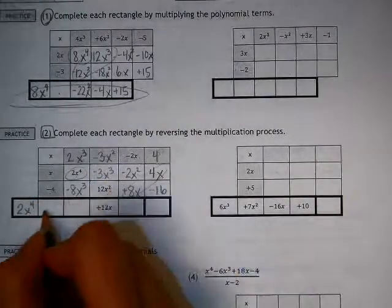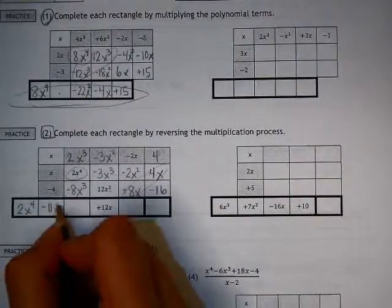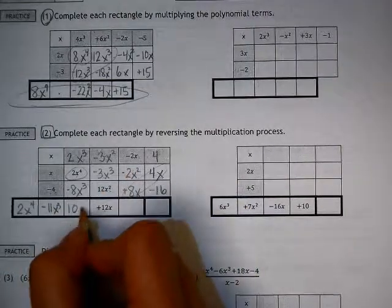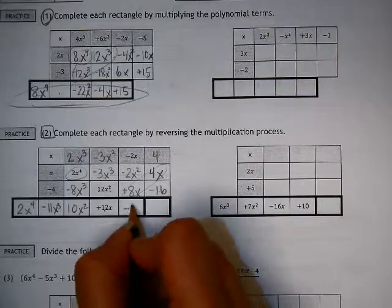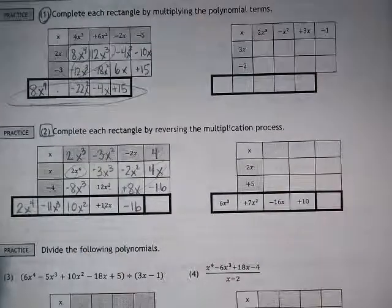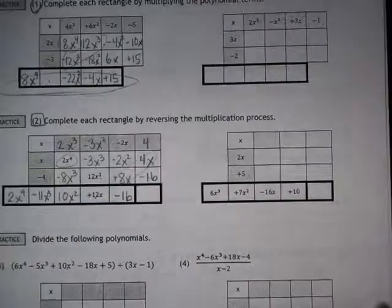So now I combine all my like terms. I don't have anything that's like this one. These go together. These go together. Sure enough, I have my 12. And then I have just my negative 16 left. So that would be it.